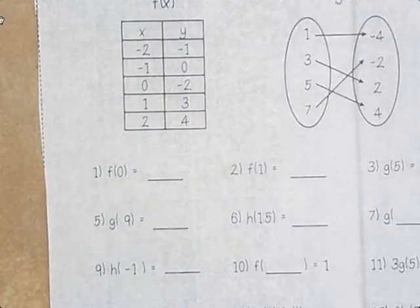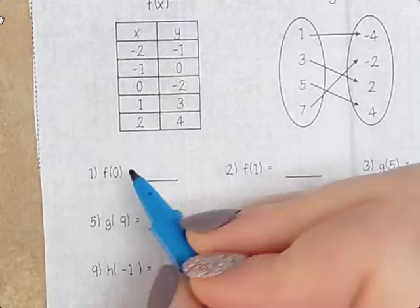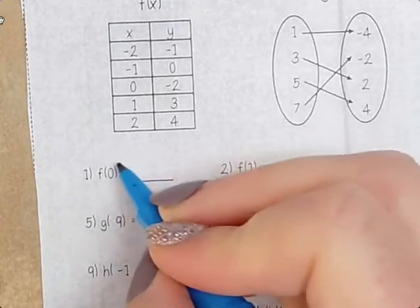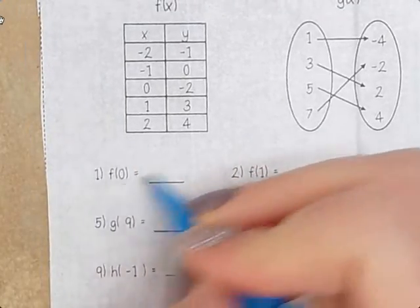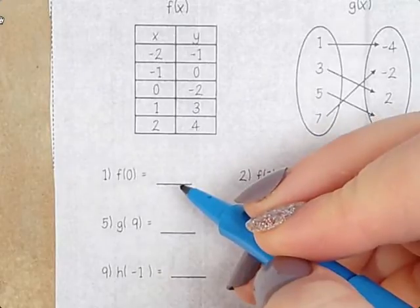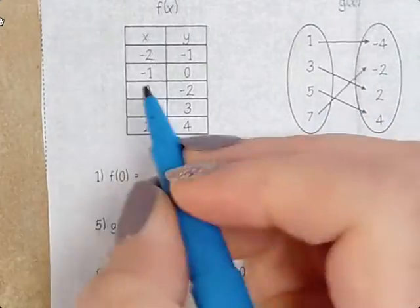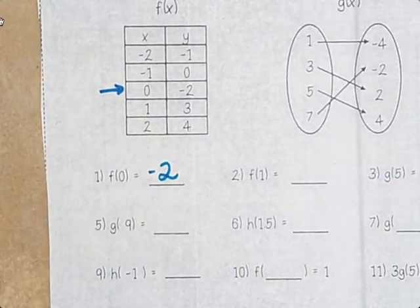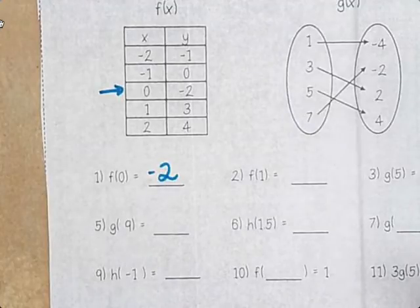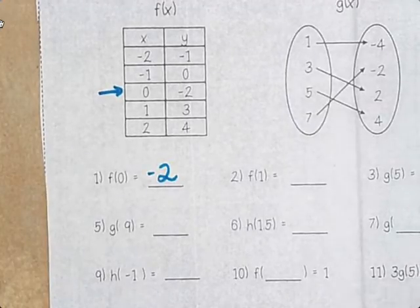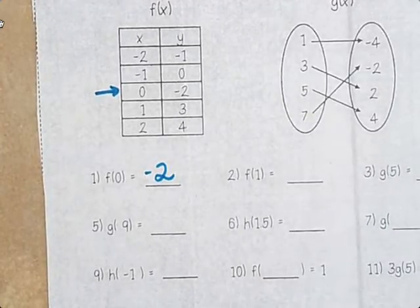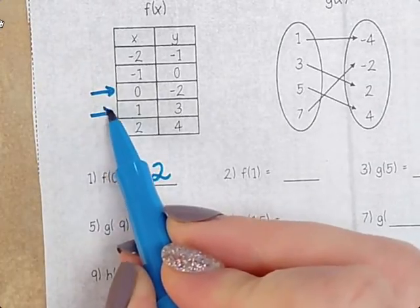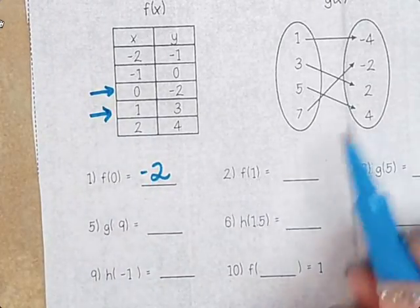So let's zoom in a little bit. So f(0). So for f(0), that means that x is 0 in the function f(x). So what does that equal? Yeah, negative 2. f(1). So when x is 1, what is y? 3.